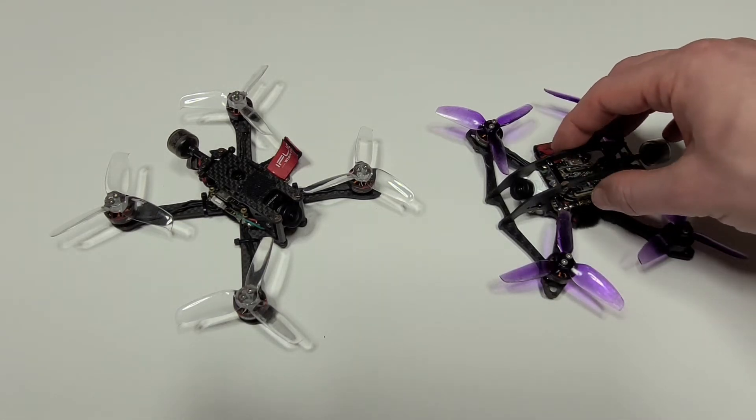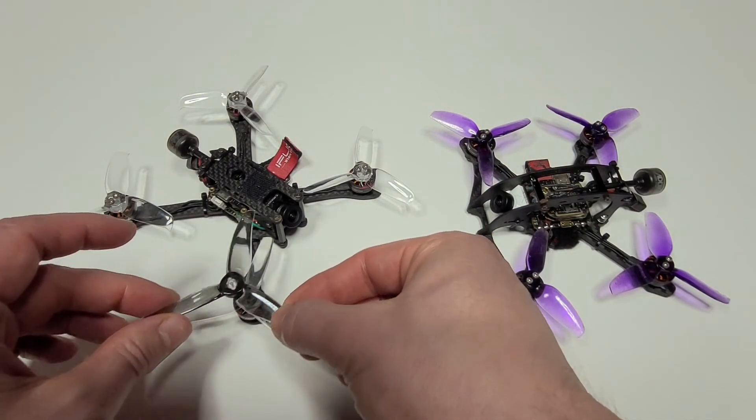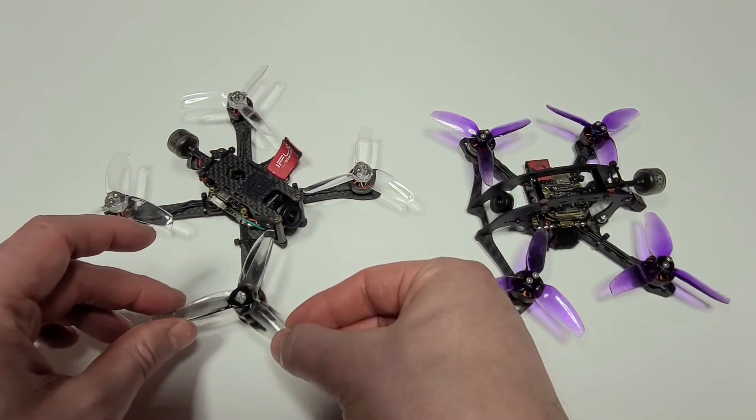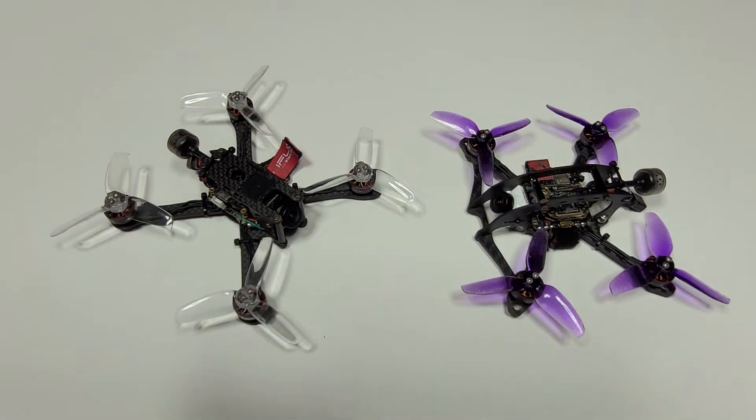When you build a light 3-inch quadcopter with a high thrust-to-weight ratio, it is extremely fun to fly. But is it possible to increase the performance or efficiency by extending the arms a quarter of an inch and then putting 3.5-inch propellers onto existing hardware? Or will the extra size require additional weight in battery or motors to efficiently spin them? Let's find out.